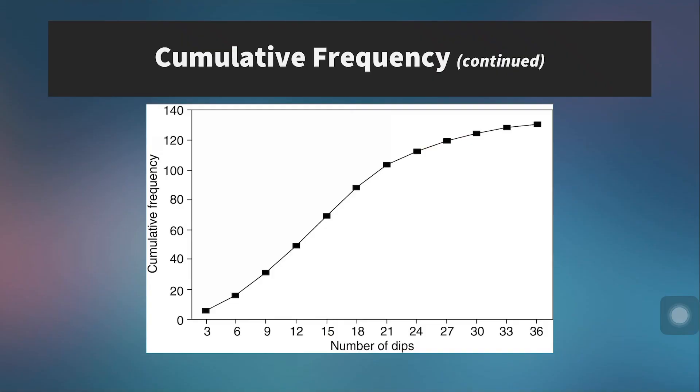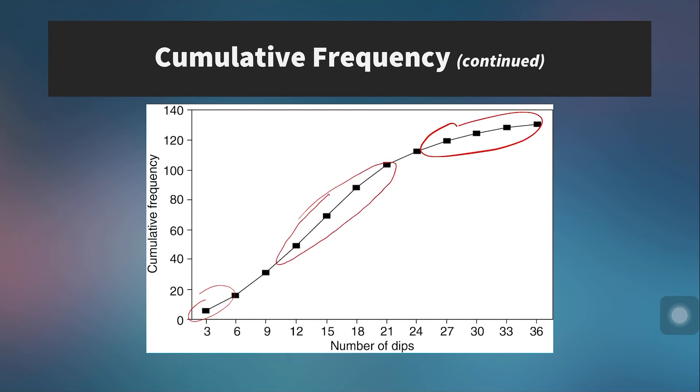The reason we sum scores at or below a given number is that it gives us the cumulative frequency graph shown here. This graph tells us which scores are least frequently achieved — at the lower and upper ends — while the steep slope in the middle section indicates many scores occurring there. A steeper curve indicates greater frequency, whereas a flatter, more gradual curve indicates lower frequency at those scores or groups of scores.